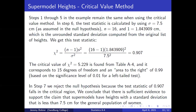The critical value of chi-squared equals 5.229 is found from table A4 and it corresponds to 15 degrees of freedom and an area to the right of 0.99 based on the significance level of 0.01 for a left-tailed test. In step seven, we reject the null hypothesis because the test statistic of 0.907 falls in the critical region. We conclude that there is sufficient evidence to support the claim that supermodels have heights with a standard deviation that is less than 7.5 centimeters for the general population of women.